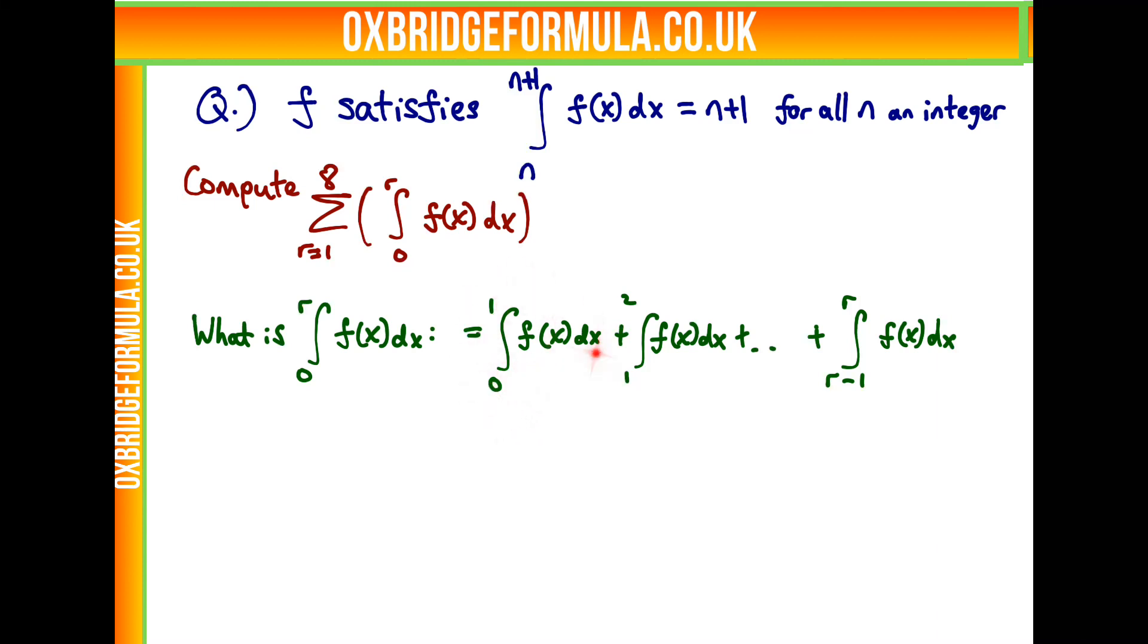So we first find the area under the graph from 0 to 1, then we add it for the area between 1 and 2, all the way up to r minus 1 to r.